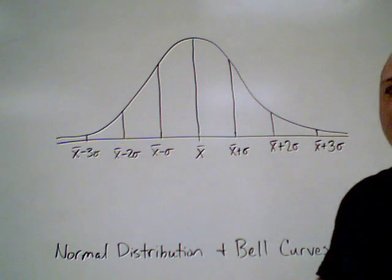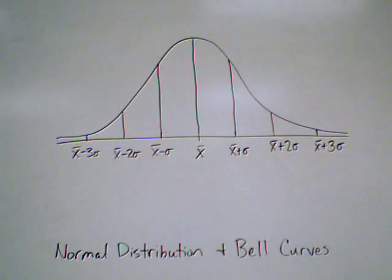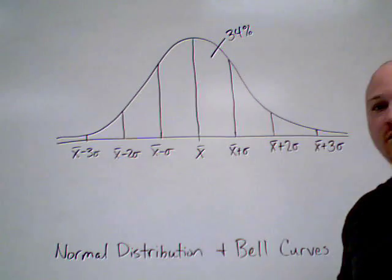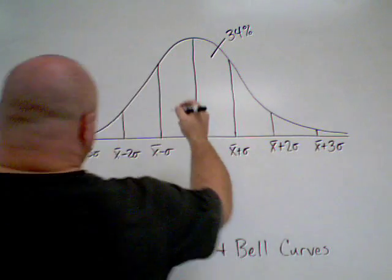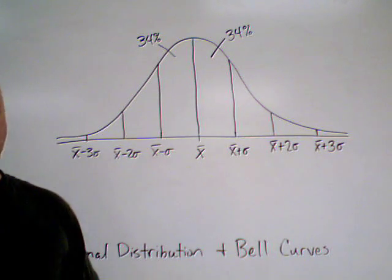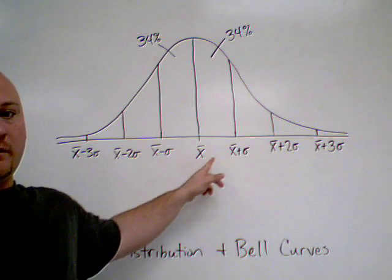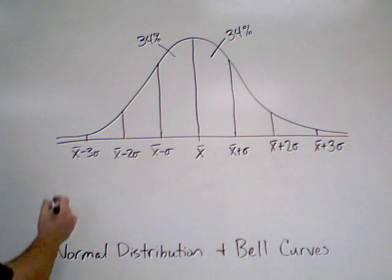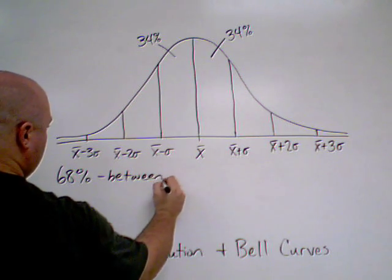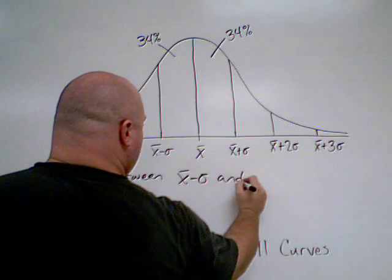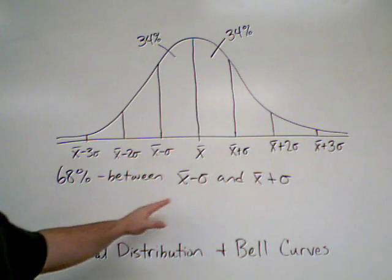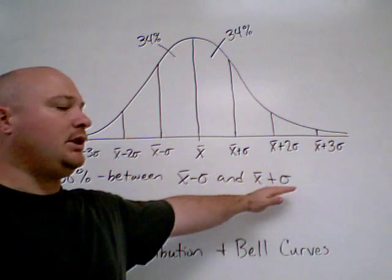The area under this curve represents 100% of our data — a total of one. This section here is 34% of the overall area, and the other side is the same, 34% as well. What this tells us is that within one standard deviation from our mean, whether minus or plus, we're going to have 68% of our data. So 68% of our data is between our mean minus one standard deviation and our mean plus one standard deviation.